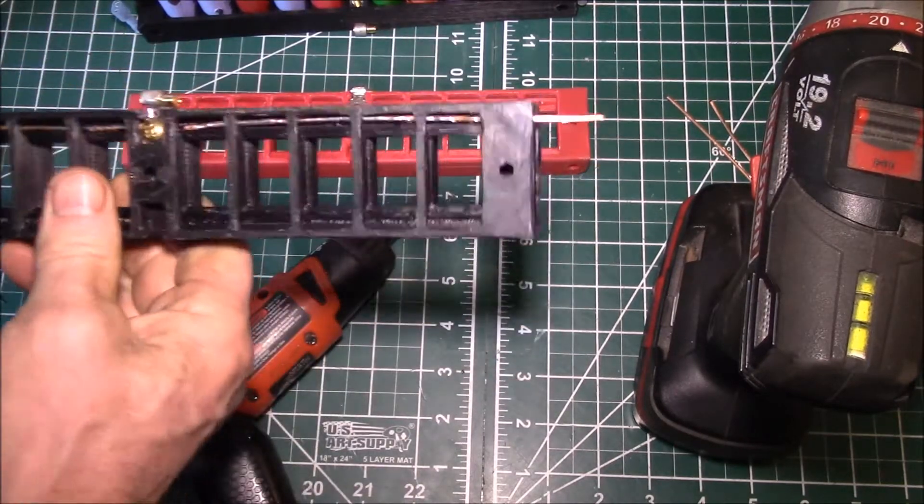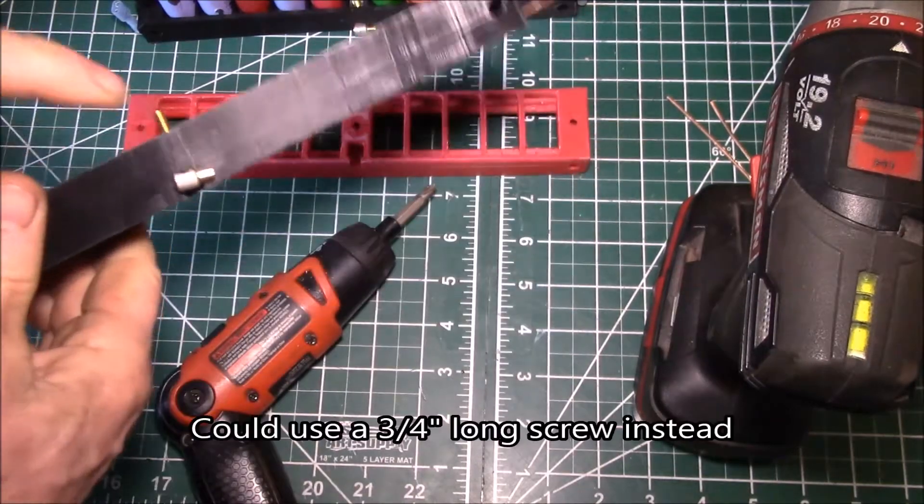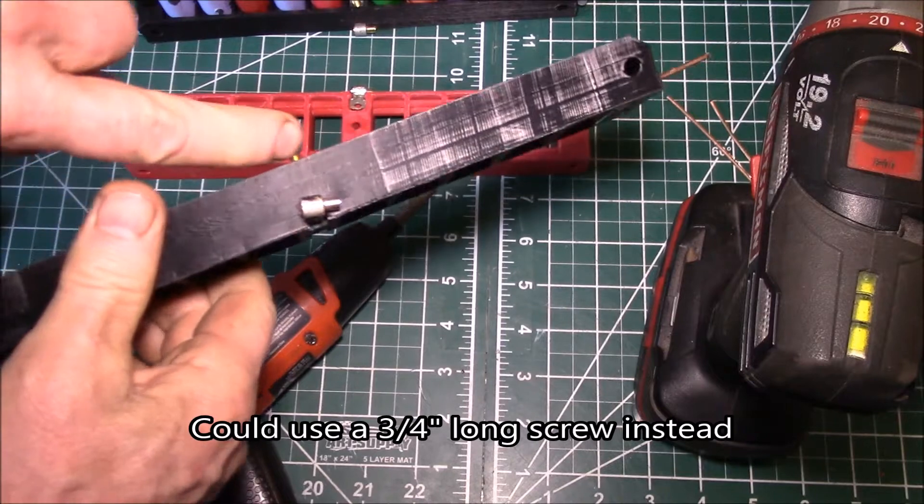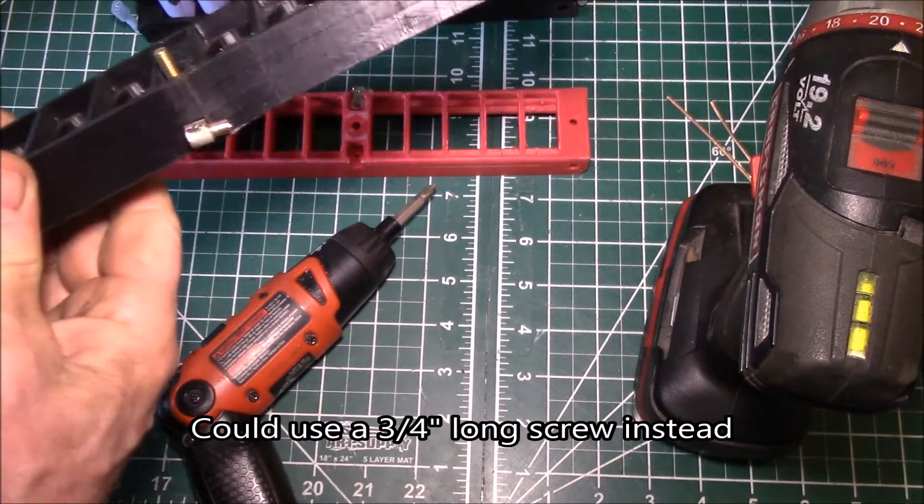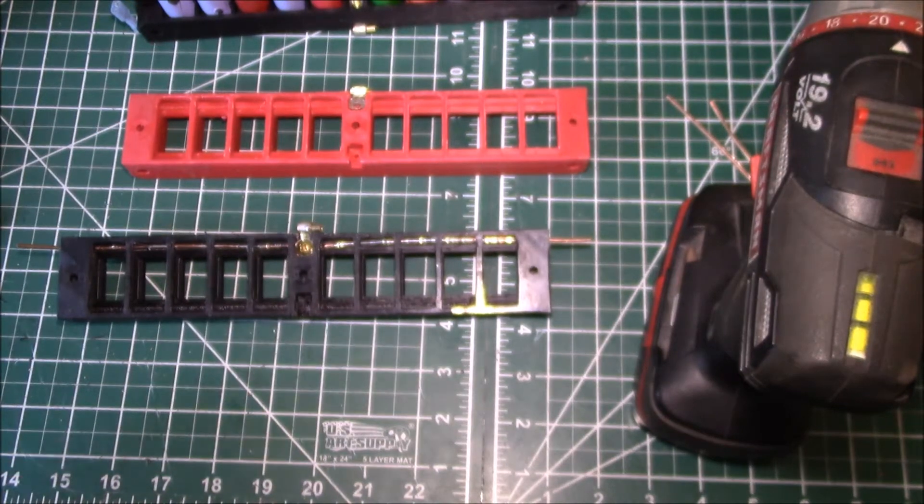Then what I do is just go on my bandsaw and nip off the end of the bolt there that I don't need. This negative one's ready to go, then I just repeat the same operation.